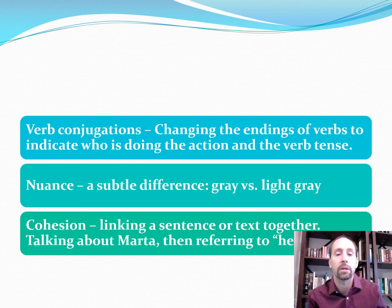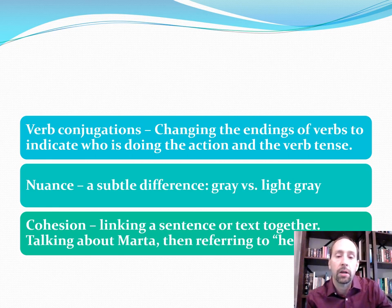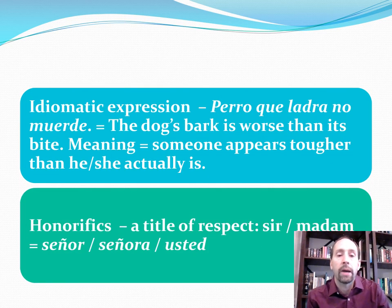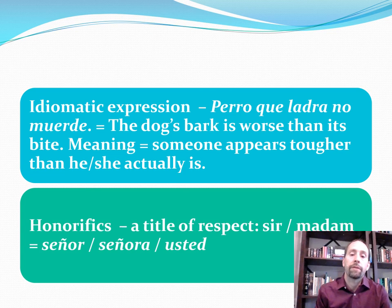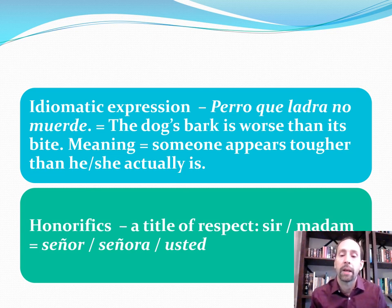A nuance is a subtle difference — for example, gray versus light gray. Cohesion is the linking of a sentence or text together, such as talking about Martha and then referring to her by pronoun. An idiomatic expression — 'perro que ladra no muerde' (the dog's bark is worse than its bite) — means someone appears tougher than they actually are. Honorifics are titles of respect; in English you might use 'sir' or 'madam,' and in Spanish 'señor,' 'señora,' or 'usted.'